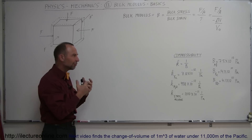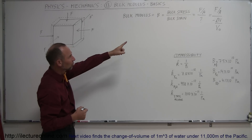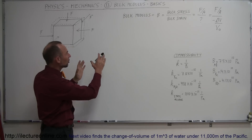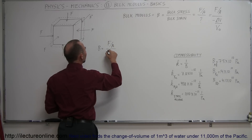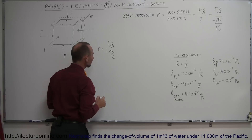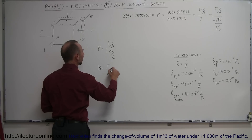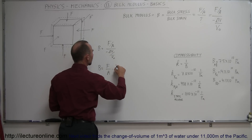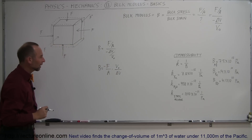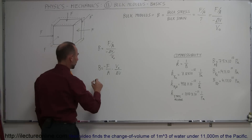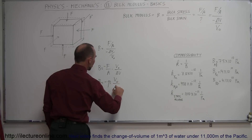Let's interpret these compressibility numbers by substituting bulk stress and bulk strain into the bulk modulus equation. The bulk modulus equals force over area divided by the negative of the change in volume over the original volume. Rewriting: bulk modulus equals (F/A) times (V₀/ΔV), with the negative sign included. Since force divided by area is pressure, the bulk modulus equals negative pressure times the ratio of initial volume divided by the change in volume.